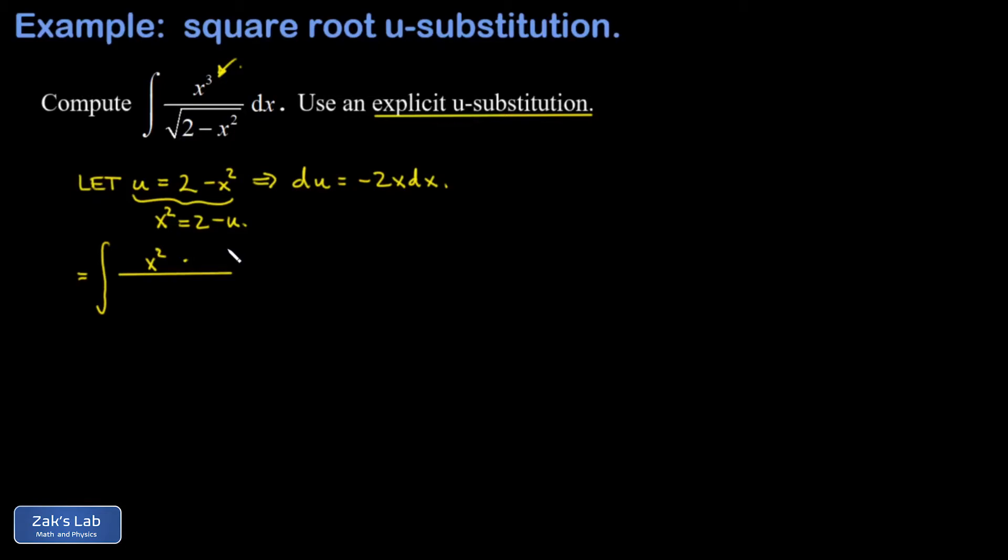Again, my numerator can be split up where I get that x out of the x cubed, and I use that to build the differential negative 2x dx. And I'm going to go ahead and throw a factor of negative 2 in there right now. And I compensate out in front by putting a negative 1 half. And then my denominator is just the square root of 2 minus x squared, which becomes the square root of u in the next step.